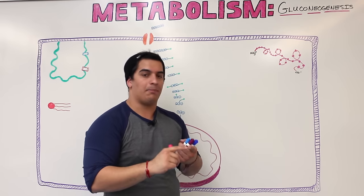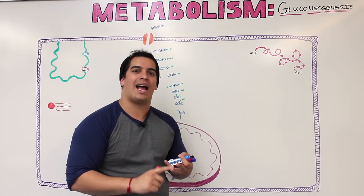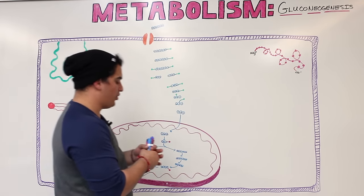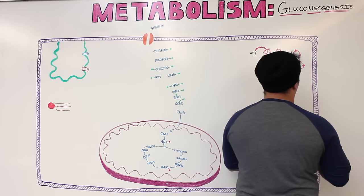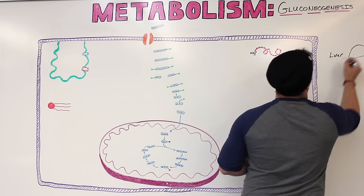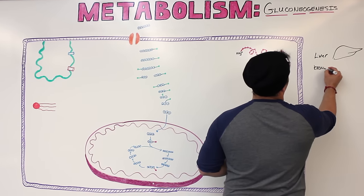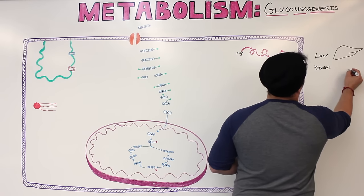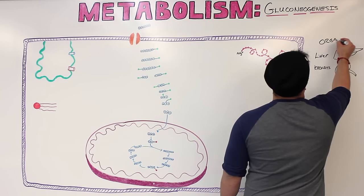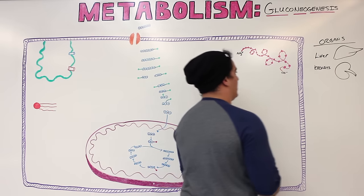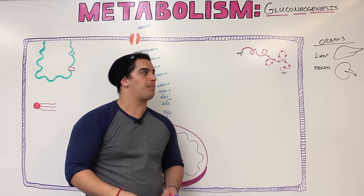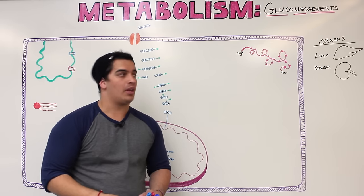The non-carbohydrate sources include things like amino acids, glycerol, and lactic acid. As for where gluconeogenesis occurs, you would find this gluconeogenic capability within the liver, and also within the kidneys — particularly the proximal convoluted tubule. So it's forming new glucose from non-carbohydrate sources in the liver and kidneys.